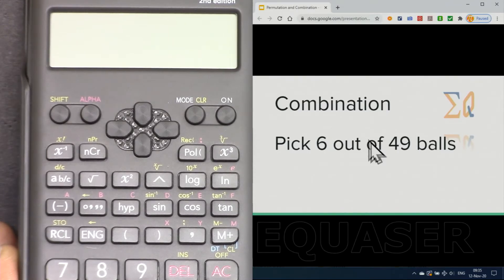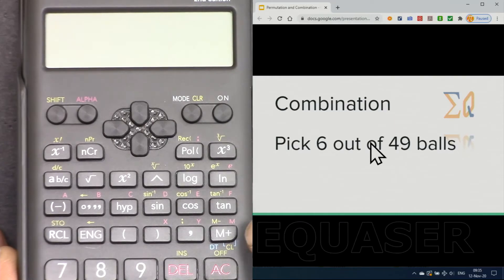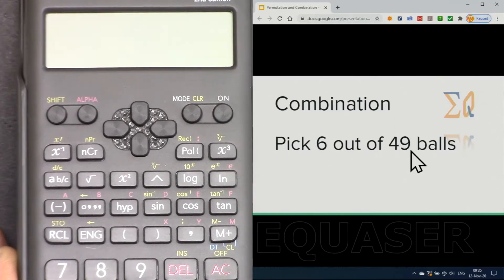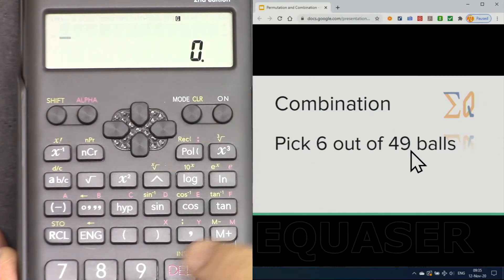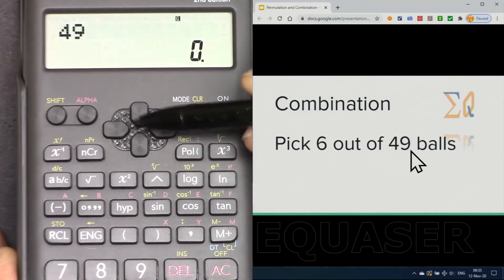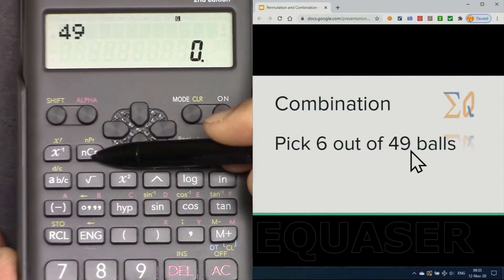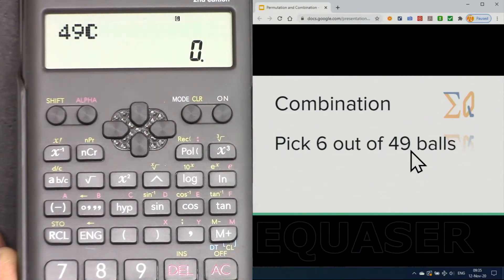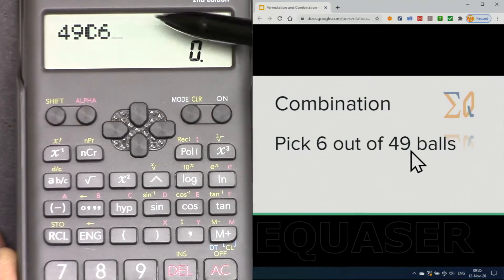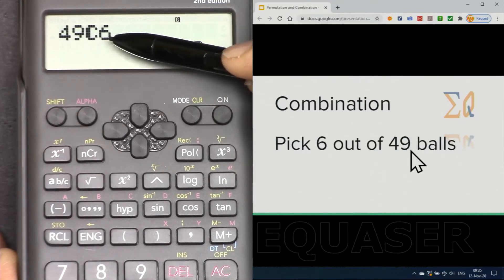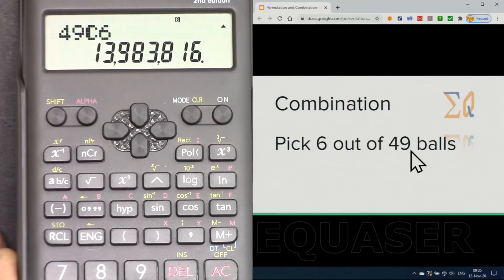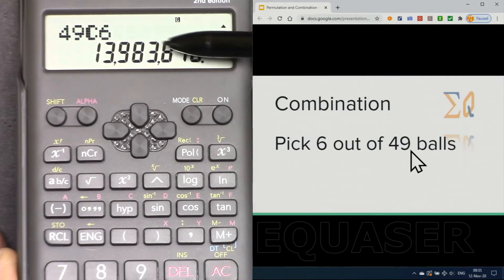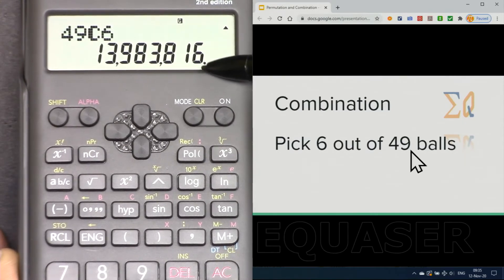We are not allowed to pick the same number twice. Let's see how we do it. We enter 49, let me turn this on. 49 and we use this C because of the combination, the letter C, and you will see here C. So 6. Now 49 choose 6. If I press equal, that's the total possibility: 13.98 million. And that's the chance of winning the lottery in some Western countries that people play.